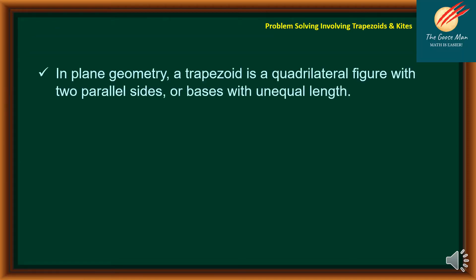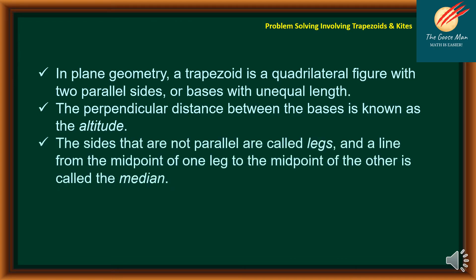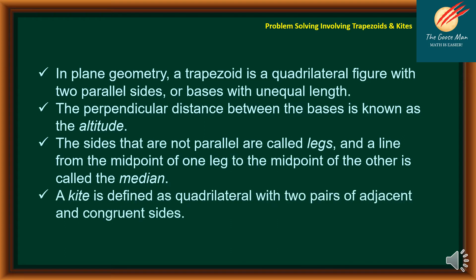In plane geometry, a trapezoid is a quadrilateral figure with two parallel sides or bases with equal length. The perpendicular distance between the bases is known as the altitude. The sides that are not parallel are called legs, and a line from the midpoint of one leg to the midpoint of the other is called the median. Also, a kite is defined as a quadrilateral with two pairs of adjacent and congruent sides.